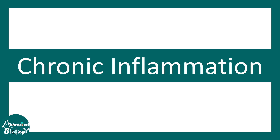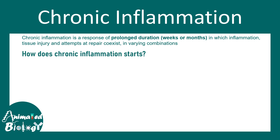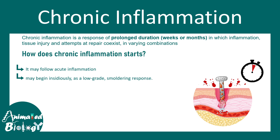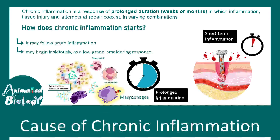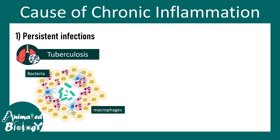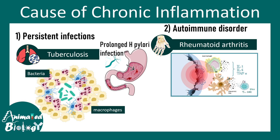The key difference between chronic and acute inflammation is a prolonged duration, often lasting weeks or months. Chronic inflammation can follow acute inflammation, but sometimes it begins insidiously without any predisposition of acute inflammation. Persistent infections can lead to chronic inflammation — for example, tuberculosis where granulomatous inflammation occurs, prolonged H. pylori infection, and autoimmune disorders such as rheumatoid arthritis, where inflammation persists for years or even decades.